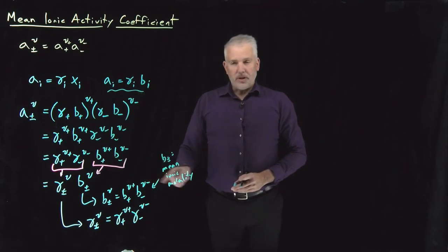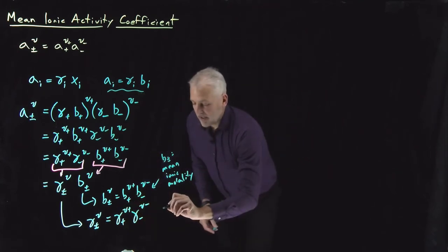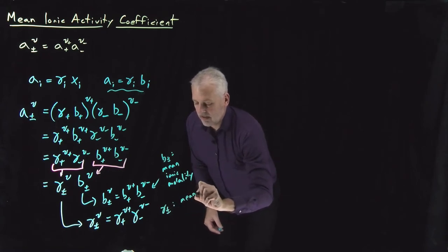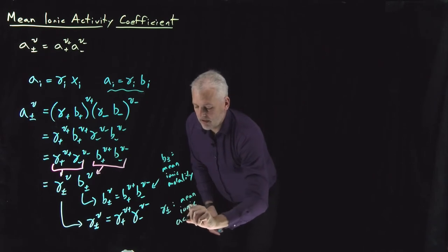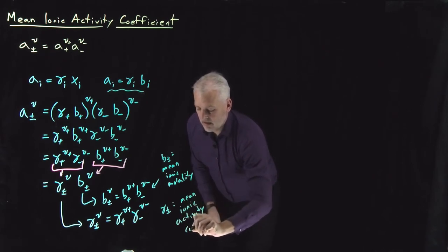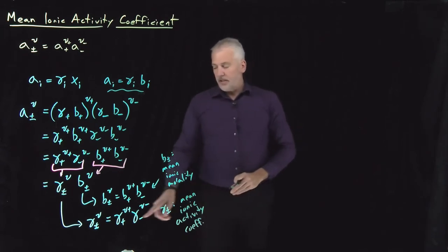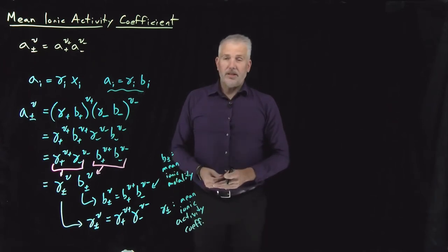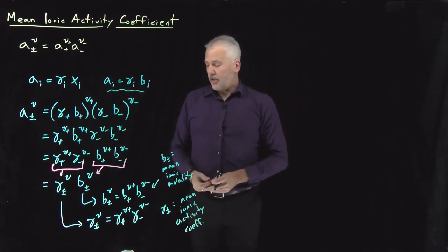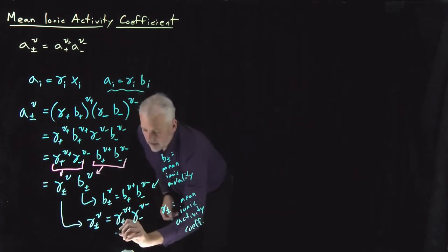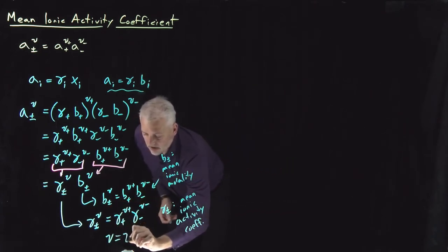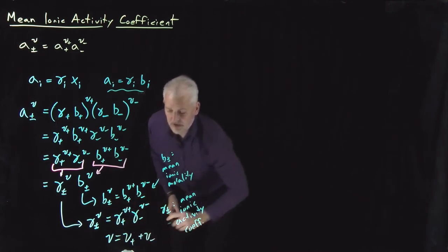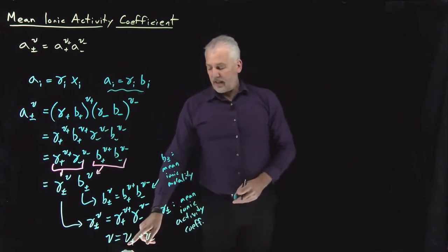Likewise, gamma plus minus is called the mean ionic activity coefficient, defined in the exact same way as we did for activity. The mean ionic activity coefficient gamma± raised to ν equals gamma+ to the ν+ power times gamma− to the ν− power, because the cation and anion arrive in solution in the same ratio. The ν without a subscript is just the sum of the stoichiometric coefficients for the cation and for the anion.